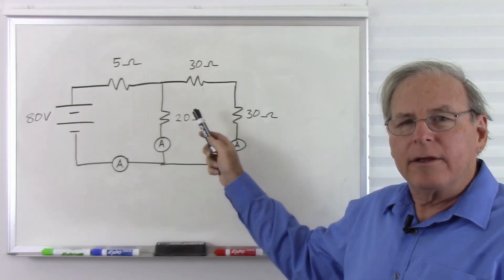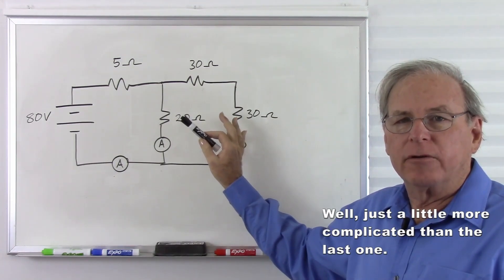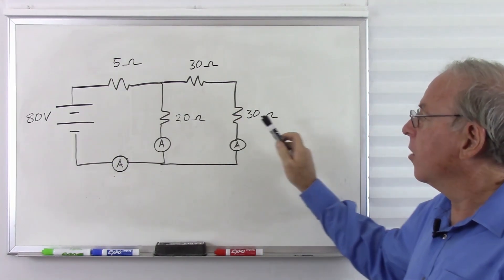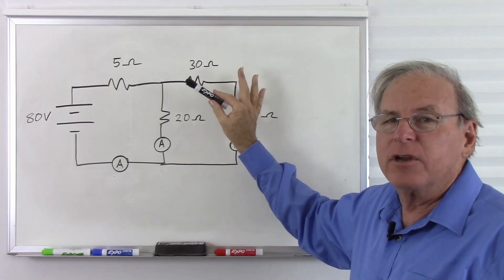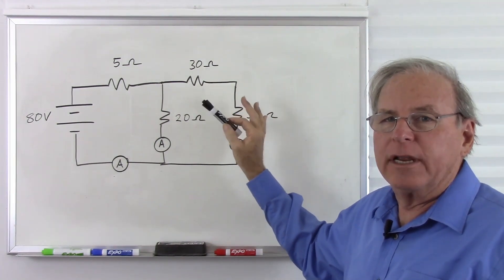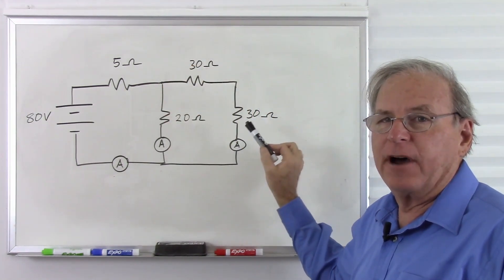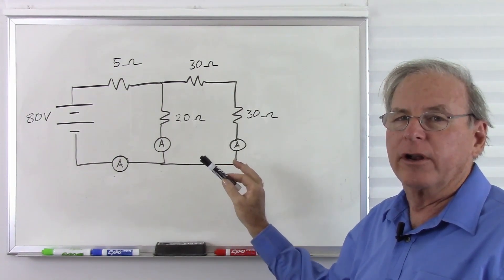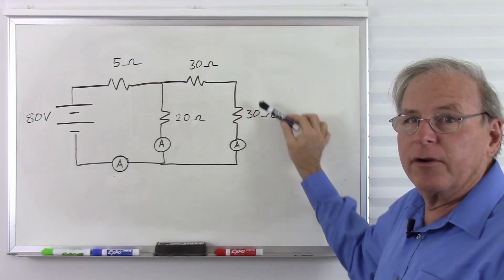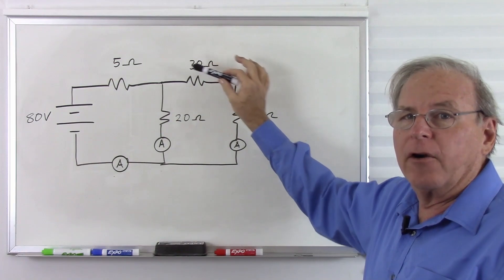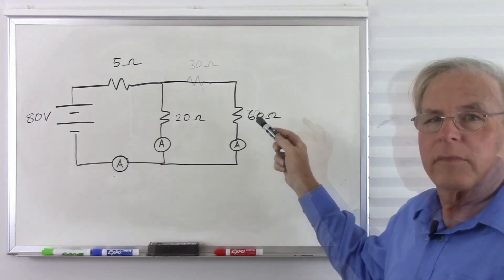This circuit is a little complicated, but if we break it down into individual parts we can work it out. There's no clear shortcut, so we need to find total resistance to calculate total current. We have two 30 ohm resistors in series with each other — only one current path between them — so together they act like a single 60 ohm resistor.